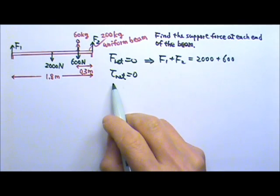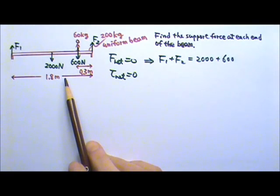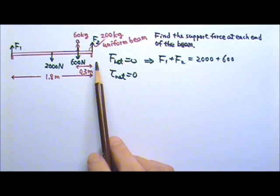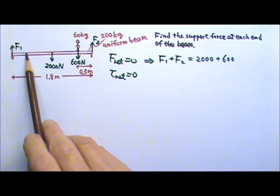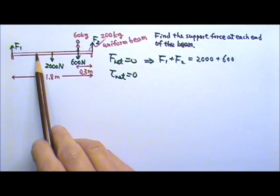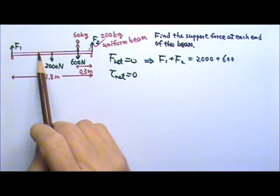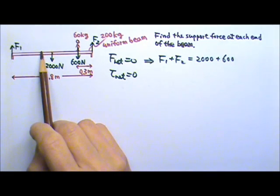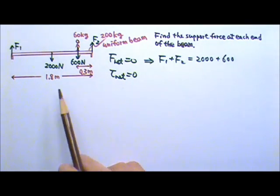In order to write about torque, we need to have an axis. There is no real axis in this picture, but because nothing is rotating anyway, we can just pretend that we have an axis somewhere — here, there, anywhere. It does not matter that this is only a pretend axis because nothing is rotating. Because we can make a pretend axis anywhere we want, we may as well put it at a location that makes our calculations easier.